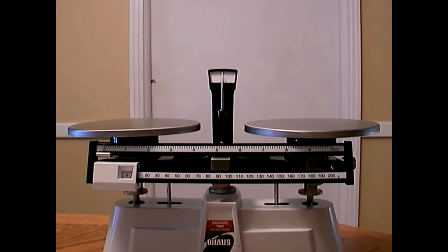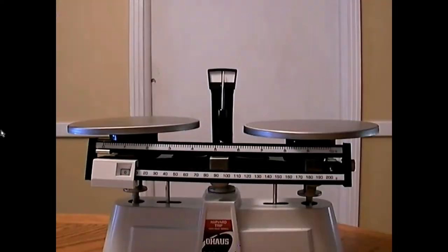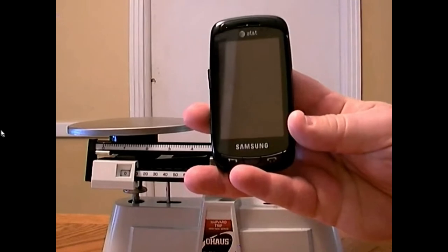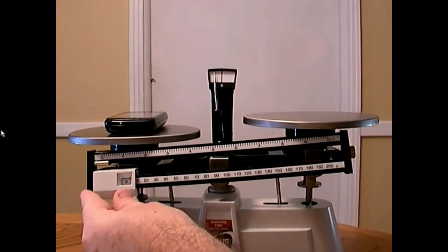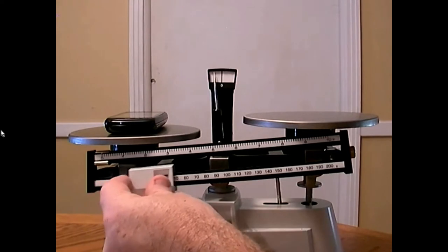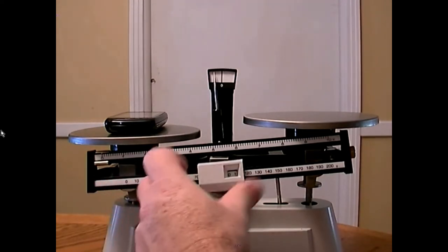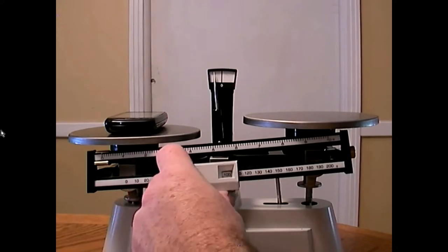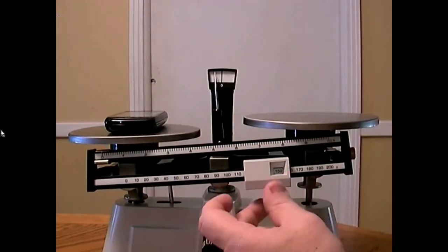So we're going to measure two household objects today. We're going to measure the mass of a cell phone. We'll put the cell phone on the left platform and let's slide this to 50, nothing. Slide this to 100, nothing. Slide it to 150, oh, see movement. Once this platform starts rising, that lets us know we're getting close.